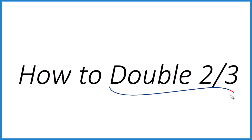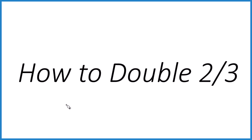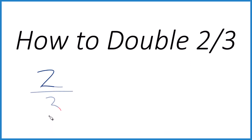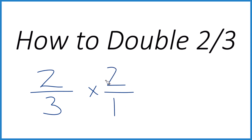If you need to double the fraction 2 thirds, here's how you do it. So let's take 2 thirds — we're going to multiply that by 2, but let's call it 2 over 1. 2 divided by 1 is still 2, but now everything lines up because when we multiply fractions, we're going to multiply the numerators, then the denominators.